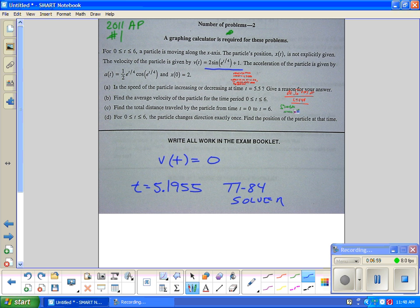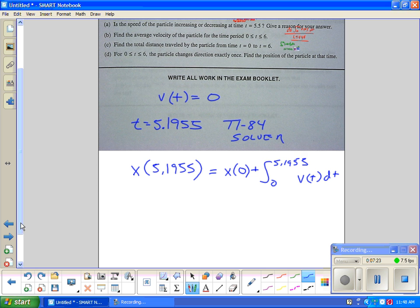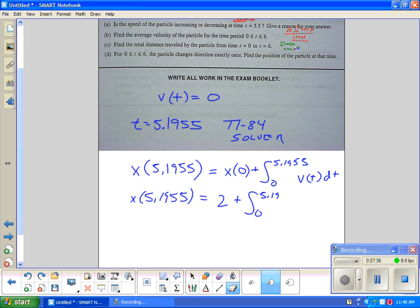This is the Fundamental Theorem of Calculus step and we're going to want the integral. So we're going to want x(5.1955). That's going to equal, I would argue it's going to equal x(0) plus the integral from zero to 5.1955 of v(t) dt. I would enter in, at the very least, the position function for the initial condition. So I would write this as 2 plus the integral from zero to 5.1955 of v(t) dt. And you've just got to put this in your calculator. If you spit this out, you're going to get 14.1348.